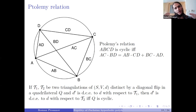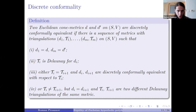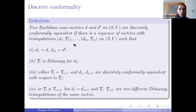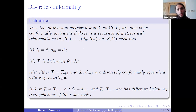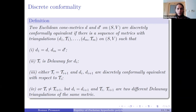With Delaunay triangulations we can attempt to give a triangulation-free definition of discrete conformal equivalence. This was given in a seminal work of Gu, Luo, Sun, and Wu. They proposed to say that two con metrics on a surface are discretely conformally equivalent if they can be connected by a sequence of pairs (metric, triangulation) such that each triangulation is Delaunay for its metric, and either the triangulation is the same while metrics are discretely conformally equivalent per the previous definition, or the metric is the same but the triangulations are two different Delaunay triangulations of the same metric.